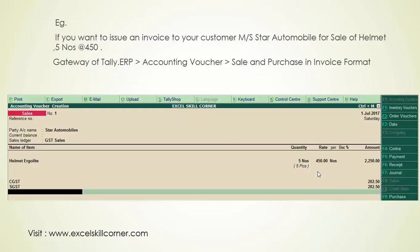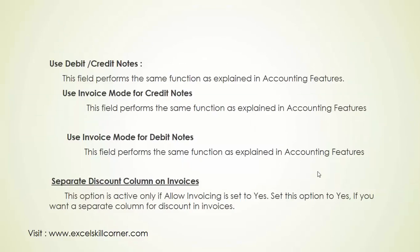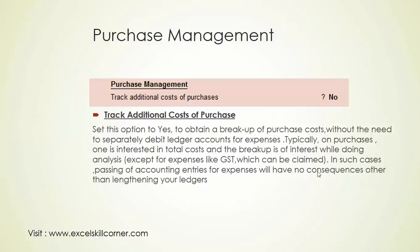In the invoice option, we will use the credit note and debit note. We will also use a separate discount option. We will use purchase management, additional cost, and tax code features. We will also use packing and forwarding — for example, the cost is enabled.